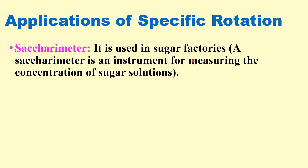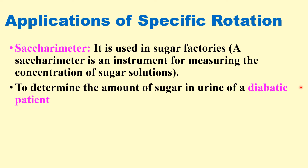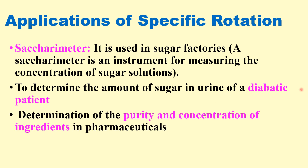What are the applications of specific rotation? It is used in sugar factories as a saccharimeter, which is an instrument for measuring the concentration of sugar solution. It is also used to determine the amount of sugar in the urine of a diabetic patient, and for determining the purity and concentration of ingredients in pharmaceuticals and drugs.